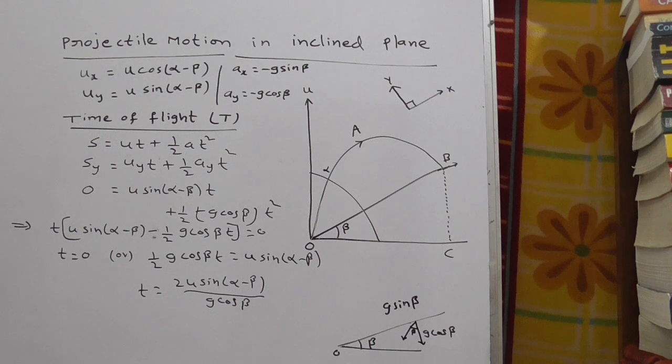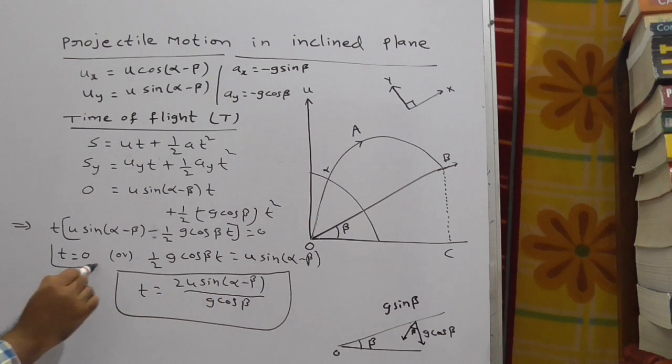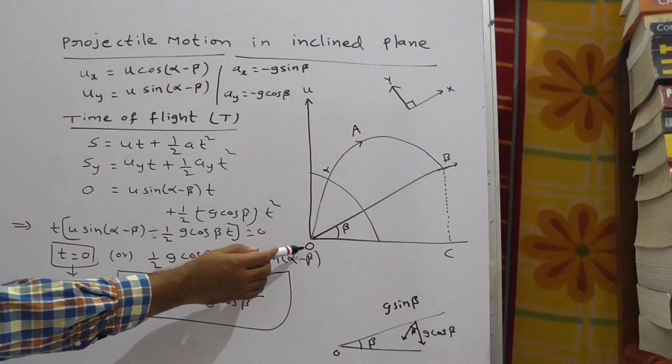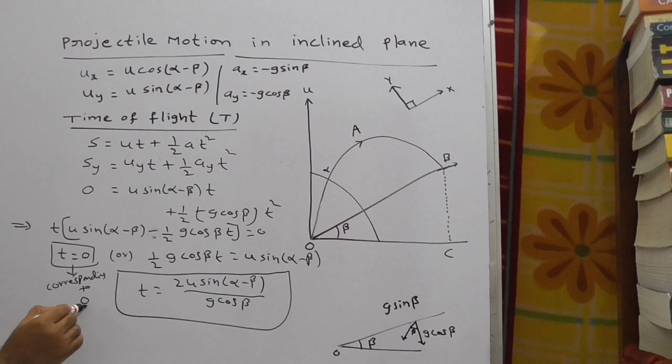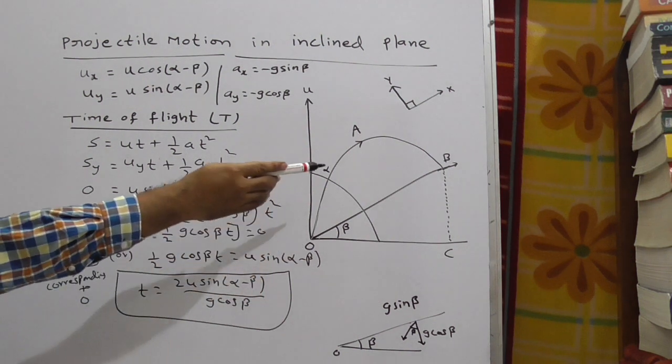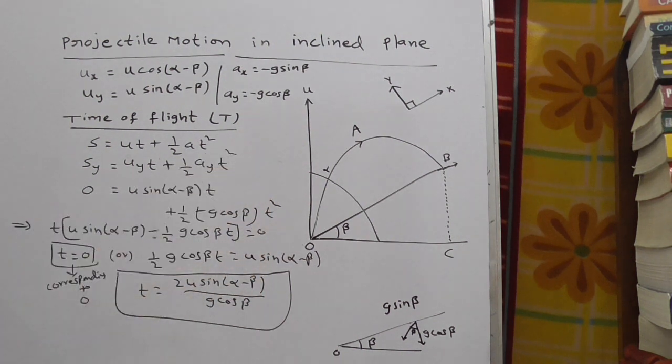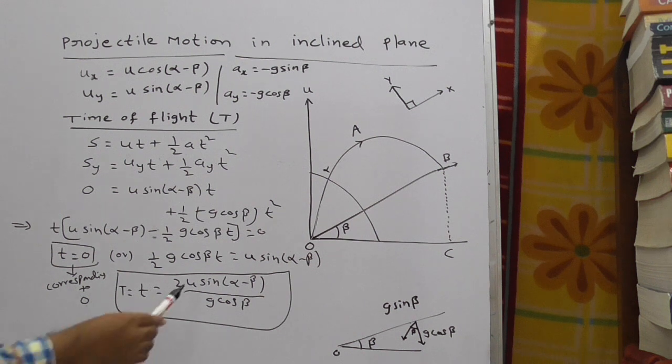2u sin(alpha minus beta) by g cos beta. This is the value of t here. This t is equal to 0 corresponding to the point O. It represents corresponding to the point O, that is initial point. But we have to consider corresponding to the point B. That is capital T. That is nothing but the equation of time of flight. Capital T is equal to what is the formula here? 2u sin(alpha minus beta) by g cos beta.